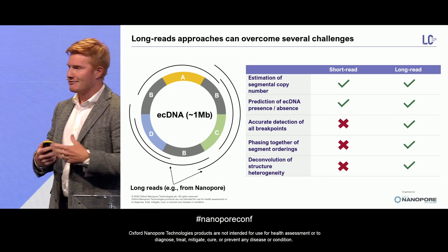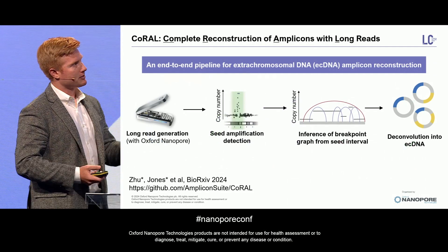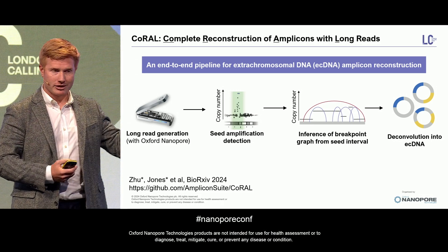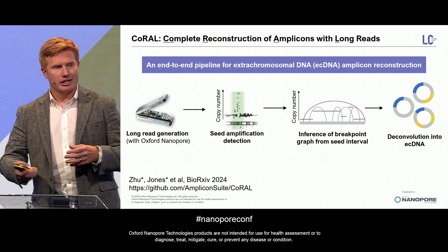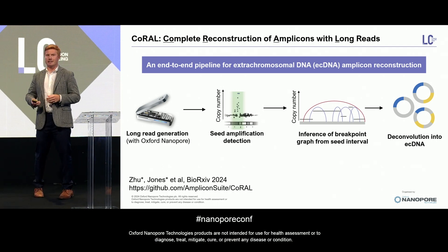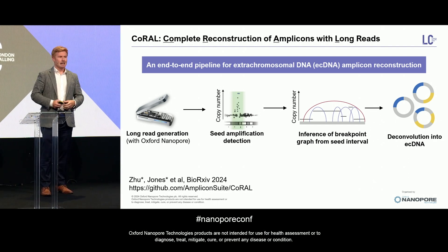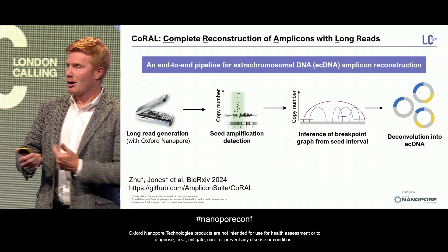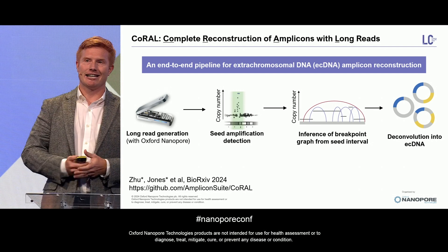Motivated by these developments and the unique advantages of Oxford Nanopore, we developed an algorithmic toolkit called CORAL, which stands for Complete Reconstruction of Amplicons with Long Reads. It starts with whole-genome sequencing data from, say, MinION or PromethION, identifies seed intervals that are focally amplified using a tool like CNVKit or Spectre, then reconstructs all structural variants connected to each focally amplified region. We encode this in a breakpoint graph and use an optimization algorithm that balances parsimony with capturing copy number and structural heterogeneity to output a collection of ECDNA amplicons.